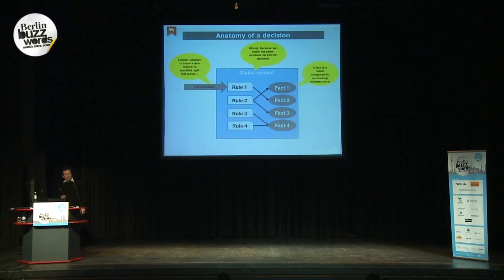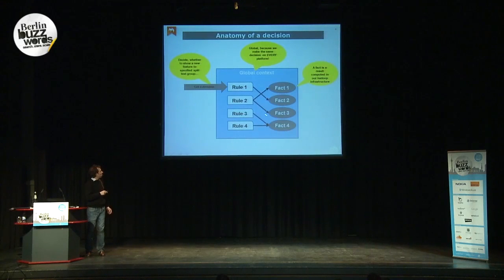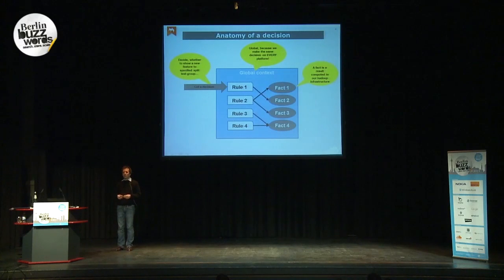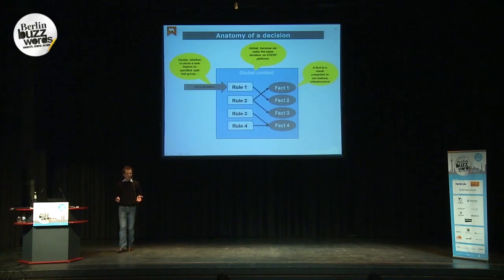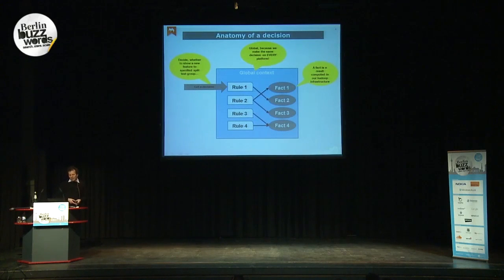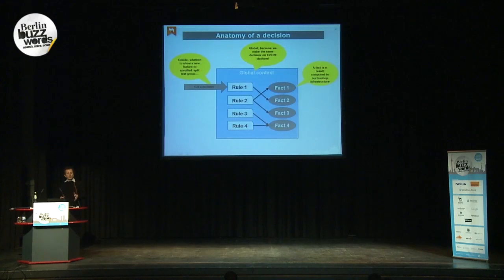A rule is interpreted every time with different facts. A fact is a result computed in our Hadoop environment. For the first time, it's computed once per month, which is not very sophisticated. You can do it once per week, but also not very sophisticated. That's the reason why we try to do near-time, real-time — we want to achieve facts in a recent time frame which is not older than five minutes.